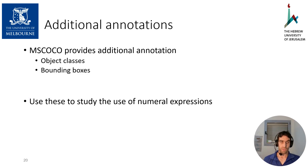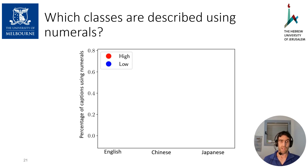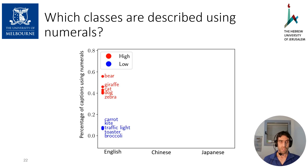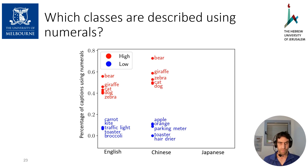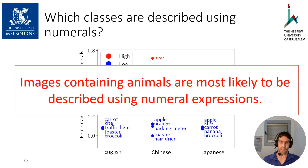MSCOCO, one of the datasets we used, contains additional annotations for each image of the classes of objects and the location of these objects via bounding boxes. We used these annotations to study the highest-scoring property: numeral expressions. We ask which classes are most likely to be described using numerals. For each class, we collect all images with instances of that class and compute the percentage of images described using a numeral expression — the y-axis — for the three languages of MSCOCO: English, Chinese, and Japanese. For English, the classes most commonly described using numerals are animals: bear, giraffe, cat, etc. We see the same pattern for Chinese and Japanese. This supports the hypothesis that images containing animals are most likely to be described using numeral expressions across different languages.